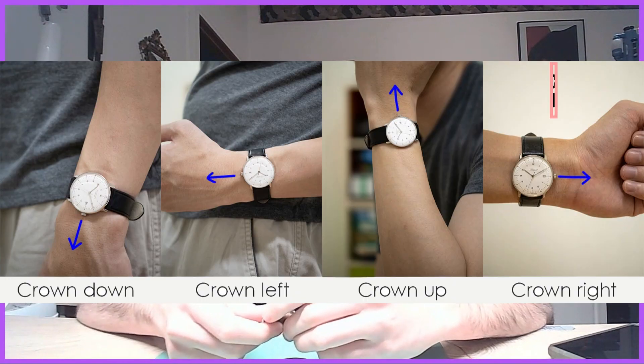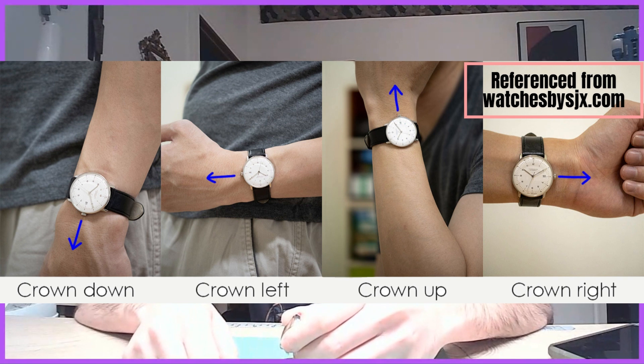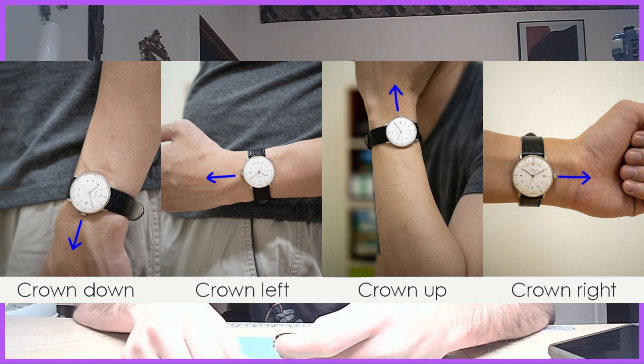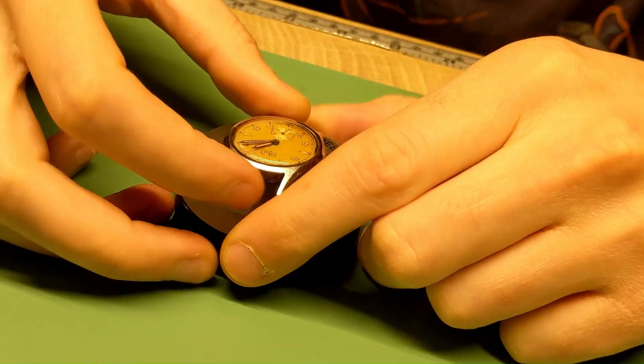You want equal amount tick to tock. That way when you're at different positions with the watch, it'll keep more consistent time. If it's a really bad beat error, dial up might be keeping time within 10 seconds a day, but crown down you might be running three minutes fast per day. That's a big difference in quality of timekeeping.